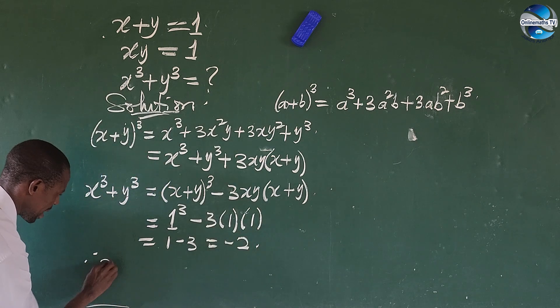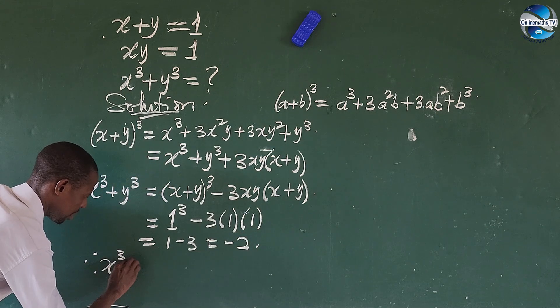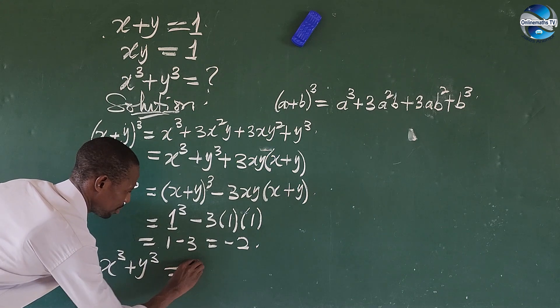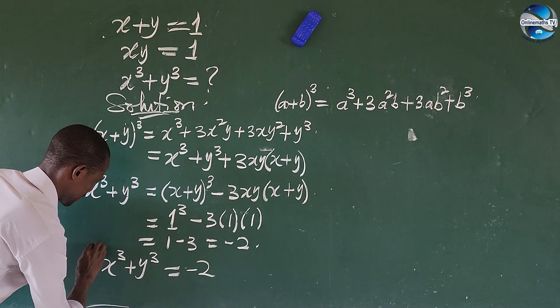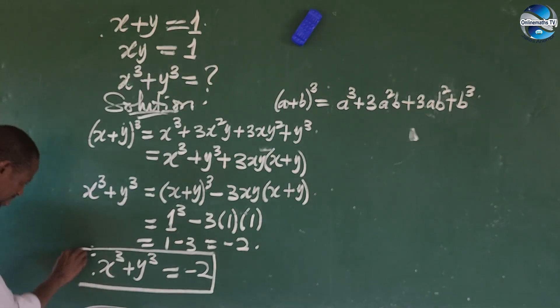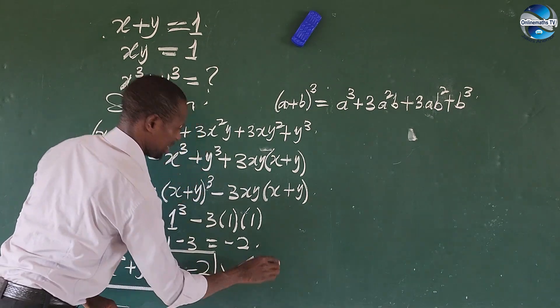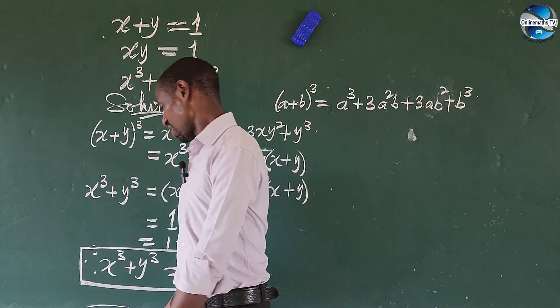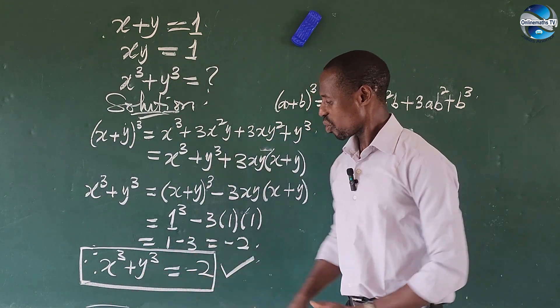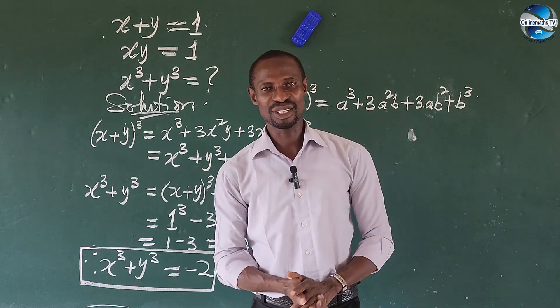So therefore, x to the power of 3 plus y to the power of 3 equal to minus 2. So this is our answer. Alright. So like I told you, I said this is a very simple challenge. So x³ plus y³ is equal to minus 2.